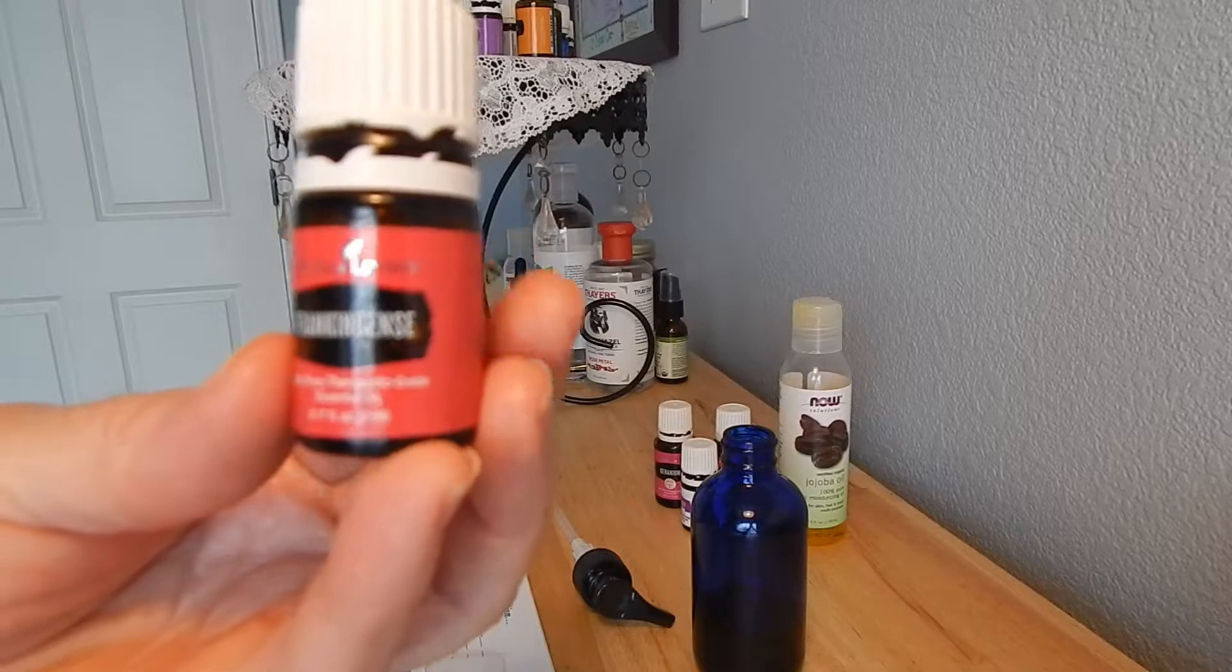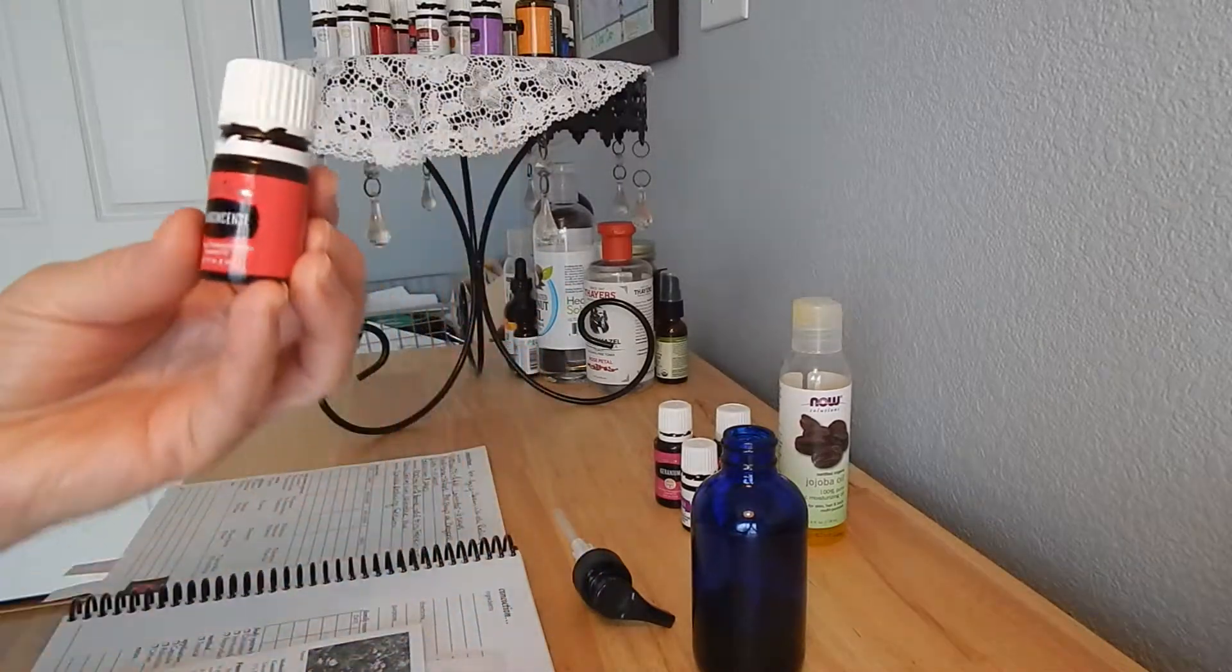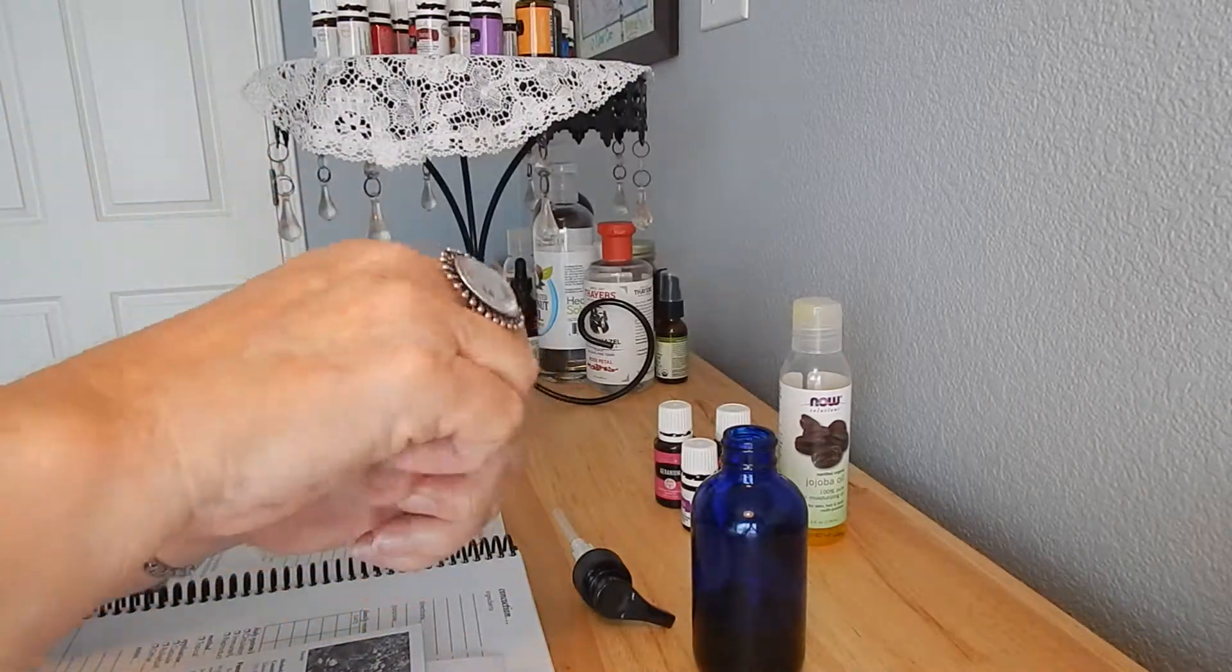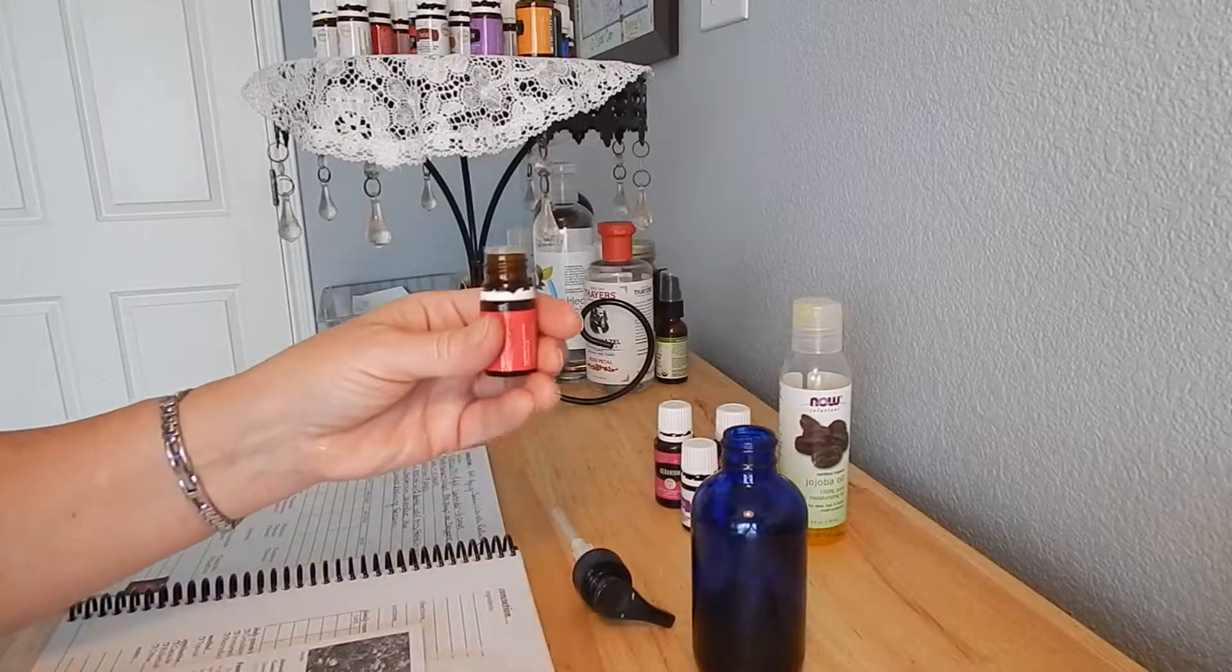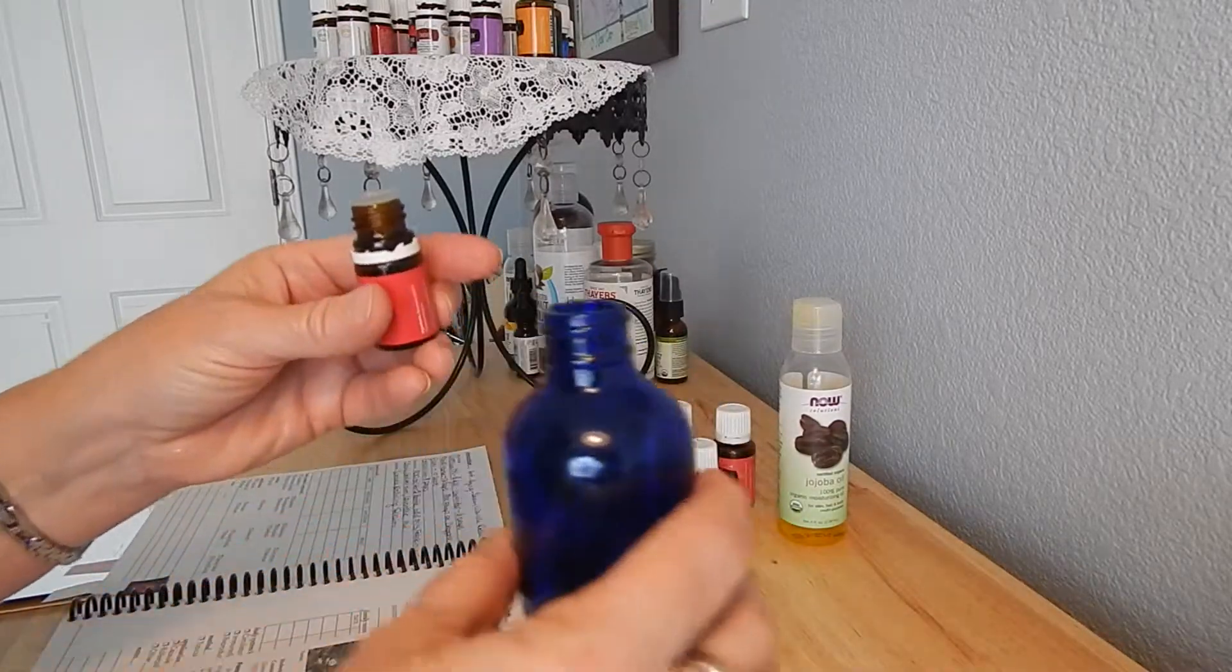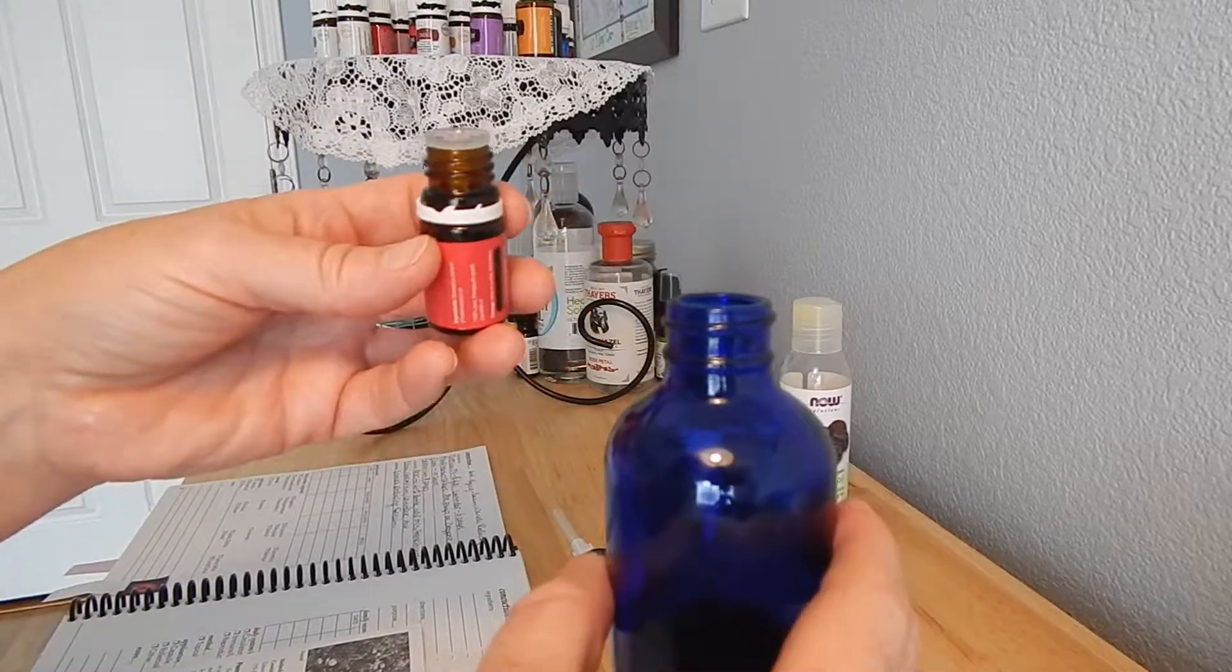The frankincense has been around a really long time. The name of frankincense is derived from the medieval French word for real incense. Frankincense is considered the holy anointing oil in the Middle East and it has been used in religious ceremonies for thousands of years.